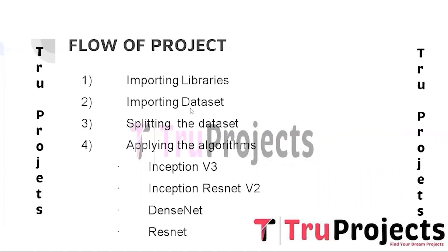The second step is importing the dataset. The dataset consists of images captured from cameras in vehicles or road infrastructure. These images include both accident and non-accident scenarios, forming the basis for training and evaluating the accident detection model.